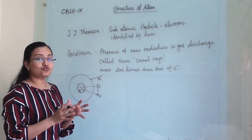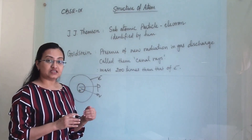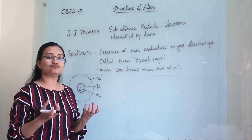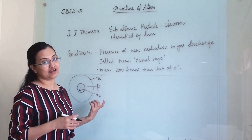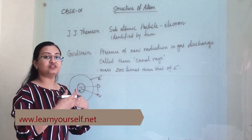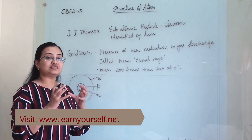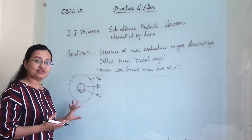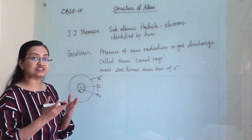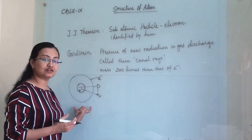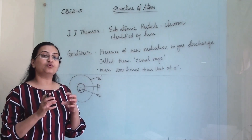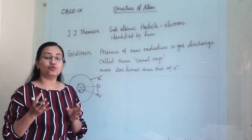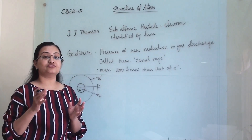Once these two particles were discovered, Dalton's theory was not wholly true, because we had to accommodate these new particles within the atom. So some scientists proposed models of the atom. We know the correct model today, but earlier scientists proposed some models that later failed because they were not entirely true for certain experiments and speculations.